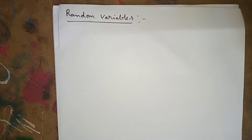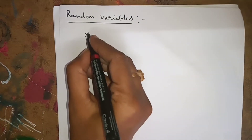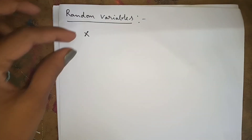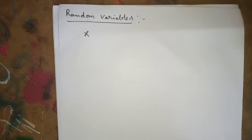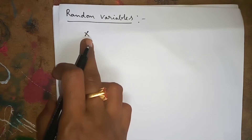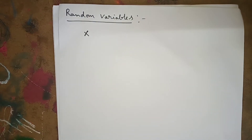Hello everyone. Today I am going to explain about random variables. Before starting, I think everybody knows the definition of a random experiment. A real variable X is said to be a random variable whose value is determined by the outcome of the random experiment.